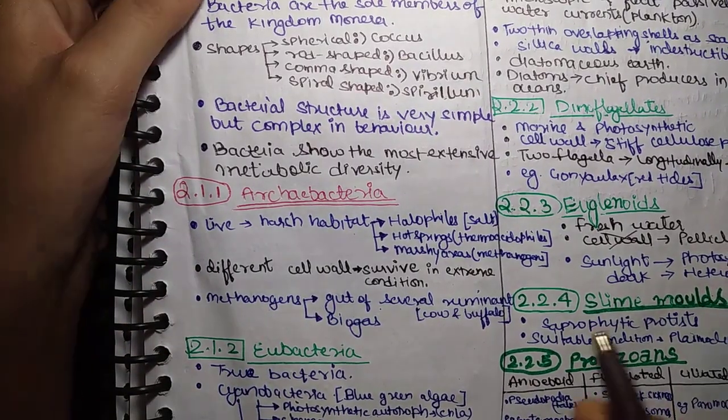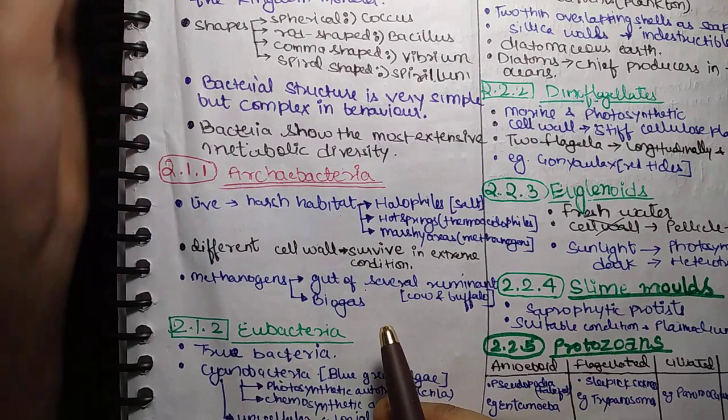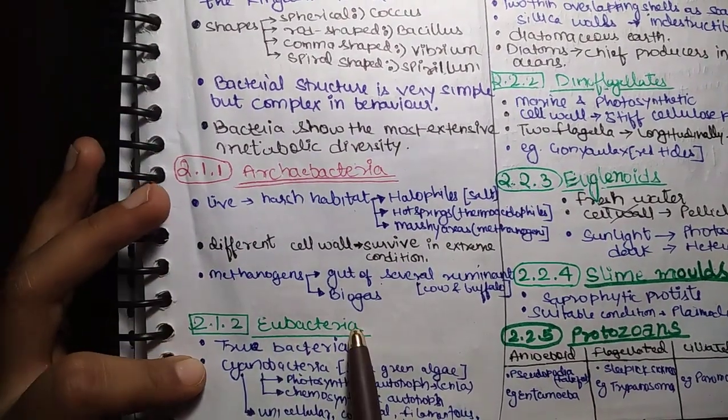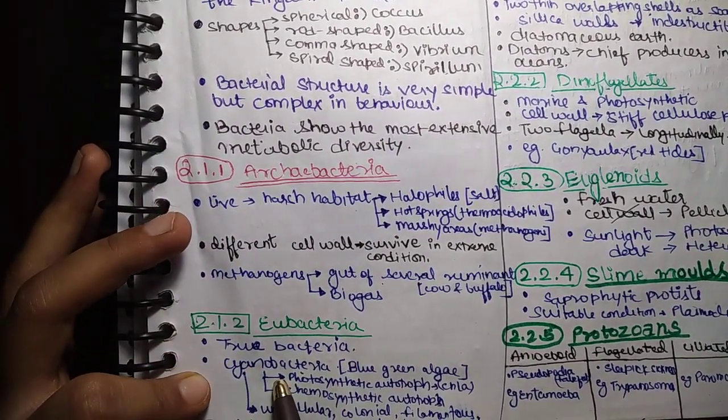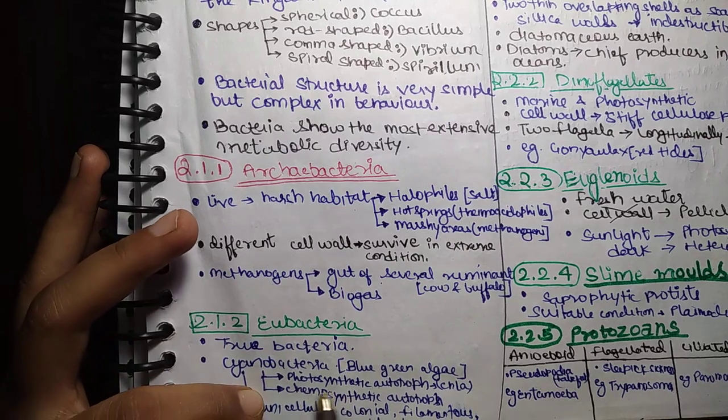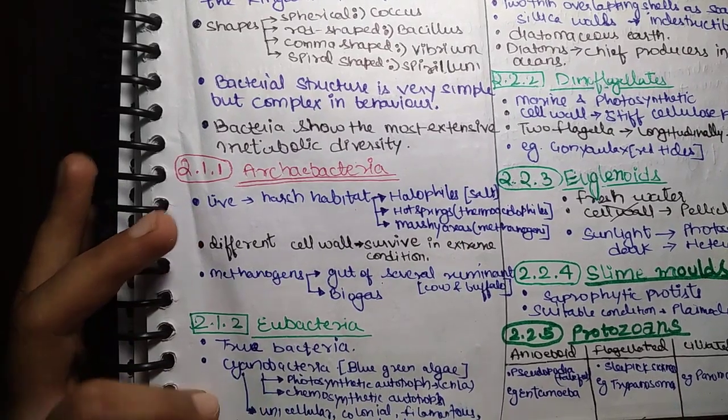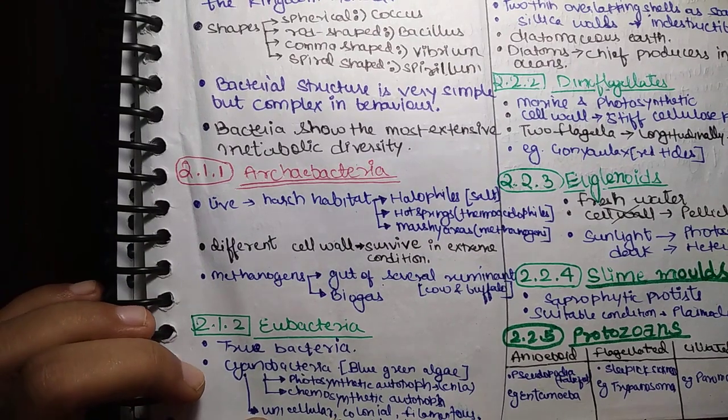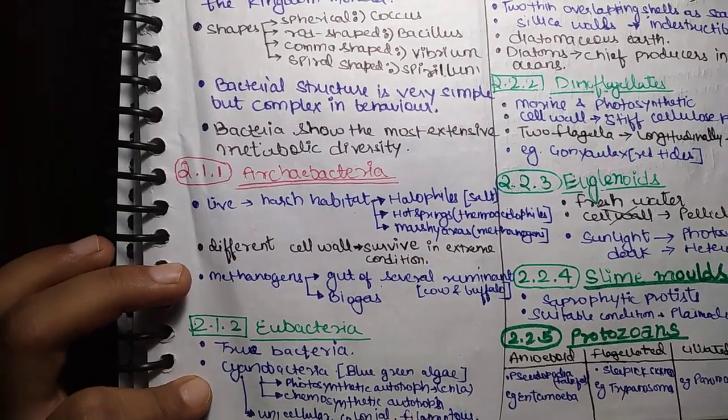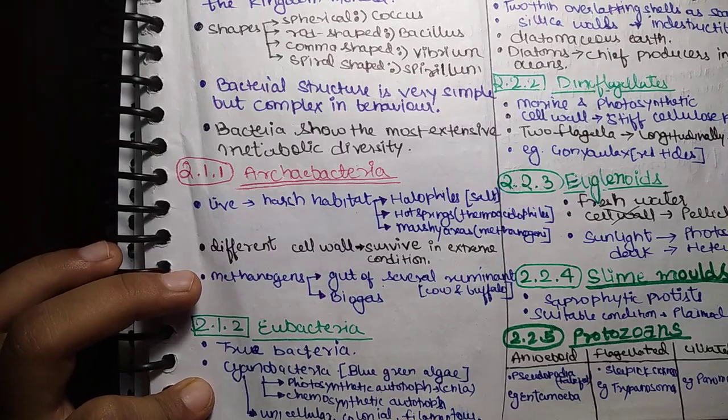Eubacteria, True Bacteria. Cyanobacteria, Blue-green algae. Photosynthetic autotroph. Chlorophyll A. Chemosynthetic autotroph. Cyanobacteria: Unicellular, Colonial, Filamentous. Fresh and marine water.